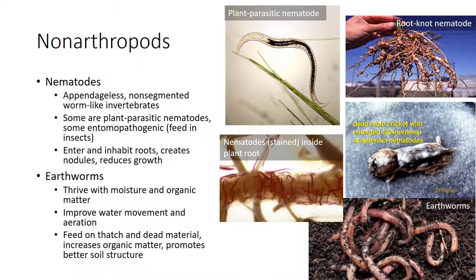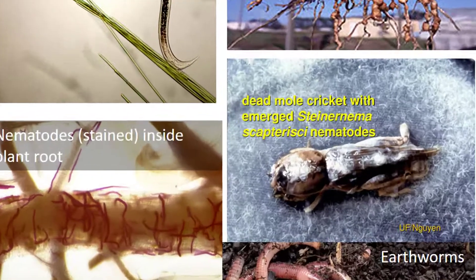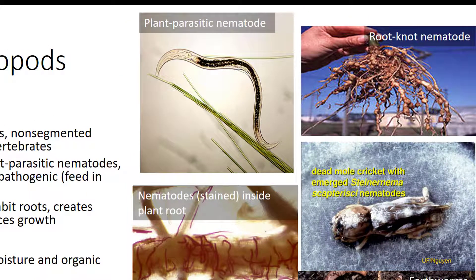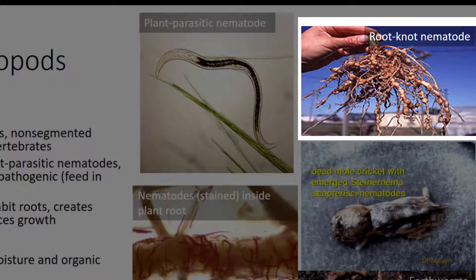Nematodes, also called roundworms, and earthworms are non-arthropods. Nematodes are appendageless, non-segmented, worm-like invertebrates with a body cavity and complete digestive tract, and are the most abundant animal found in the soil. Some nematodes are parasites that attack a variety of horticultural crops, including fruit trees, turf grasses, vegetable crops, and ornamentals. One advantage of some types of nematodes is that they feed on the mole cricket and other insects, thereby acting as a form of biological control. However, the disadvantage of nematodes is that they feed on the roots of plants and create an entry for disease organisms. In addition, nematodes enter and inhabit the roots, which creates nodules on the roots and reduces the growth of the plant.